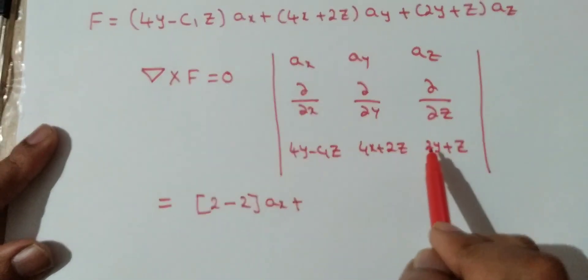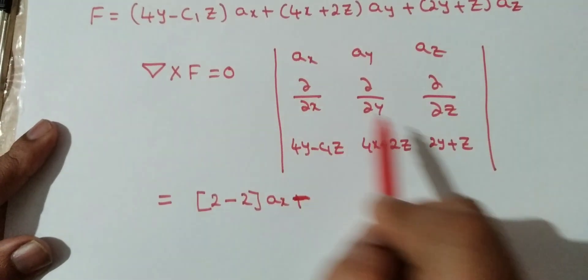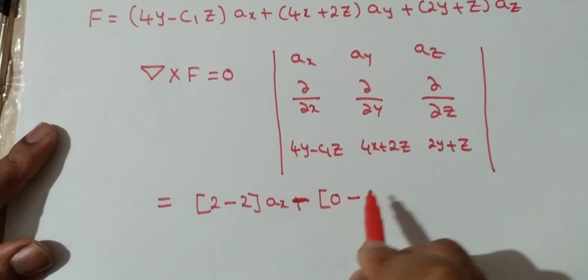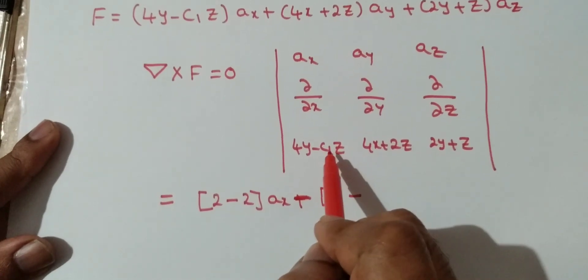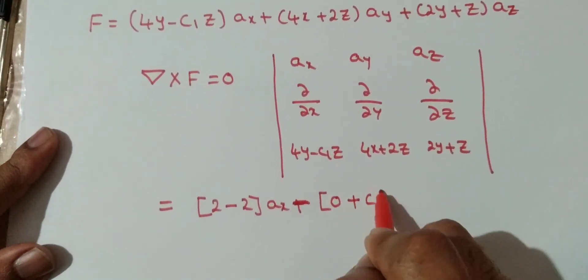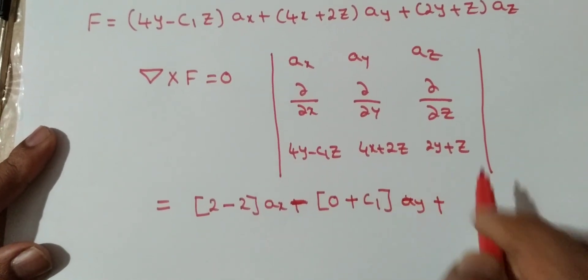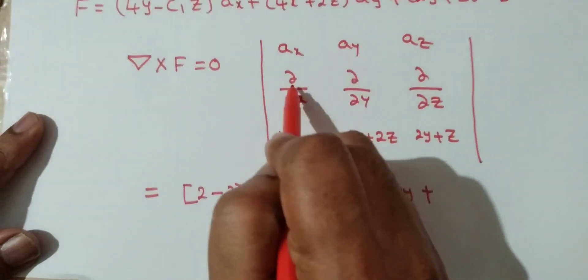∂/∂z of (4x + 2z) minus ∂/∂x of (4y - c1·z) gives 0 minus (-c1), which equals c1 for the ay component.